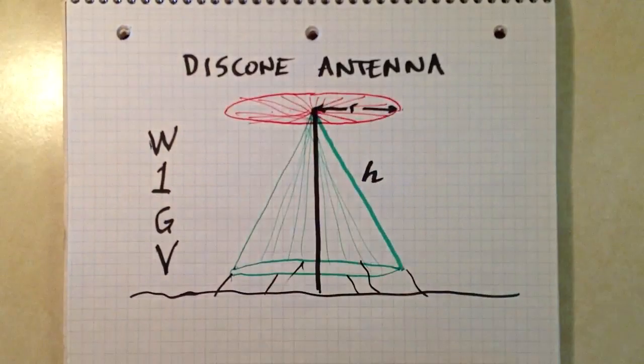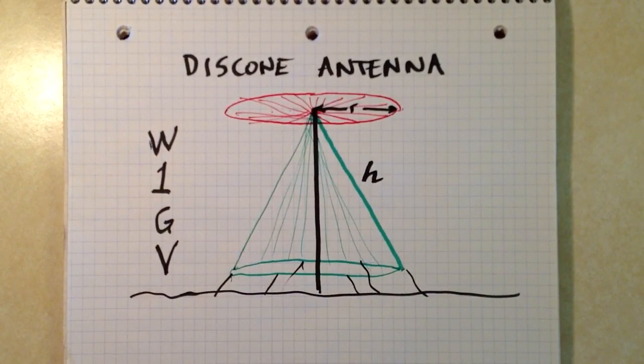Now, the advantage of this antenna, similar to the conical monopole, is the fact that it is a wide band antenna. It acts, in some sense, like a high-pass filter. It will work at all frequencies above the lowest frequency that you design it for.